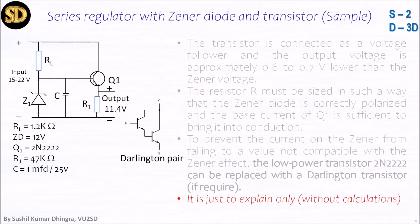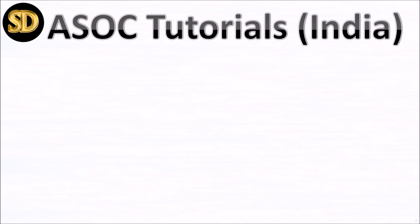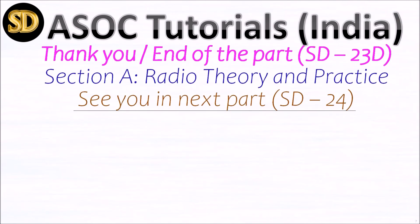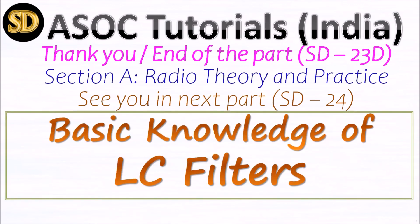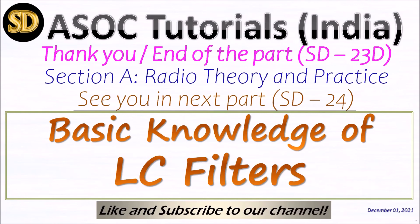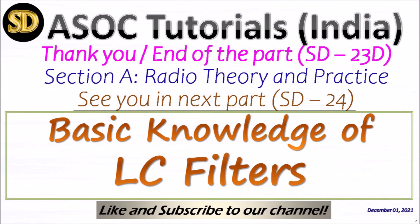This is just an explanation without calculation — just the working of a Zener diode and how it works. The next part continues with regulated power supply and using LC filters, how to convert pulsating DC to filtered DC. This is the end of today's session. I will continue with this topic and the next part will cover basic knowledge of LC filters — pipe filters, L filters, T filters, and many more. If you like it, kindly subscribe to my channel. Thank you very much.